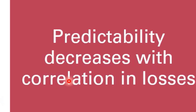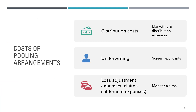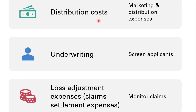Although there are many benefits from pooling arrangements, there are also costs. Typical examples include distribution costs such as marketing and distribution expenses, underwriting costs such as screening of applicants, and loss adjustment expenses — also called claim settlement expenses — such as claims monitoring.